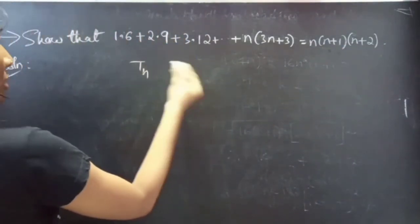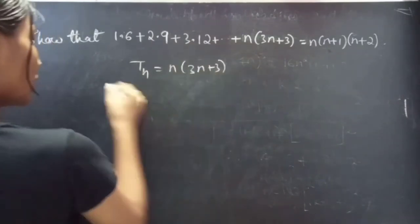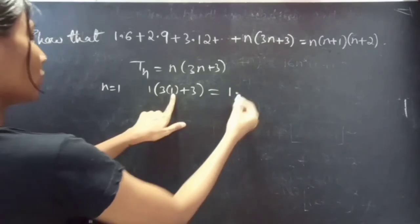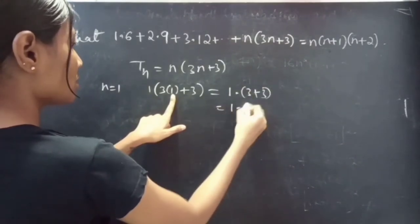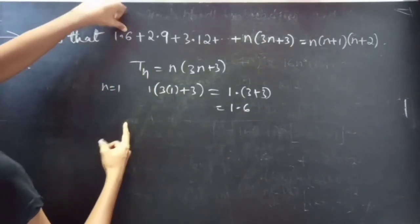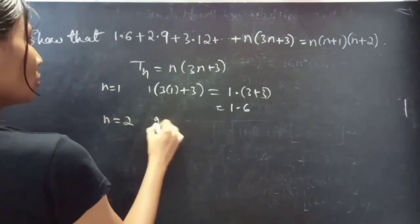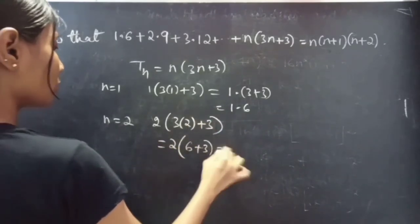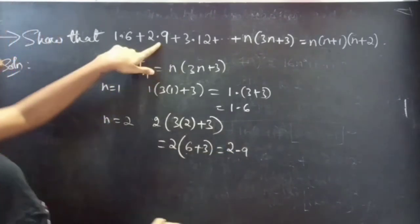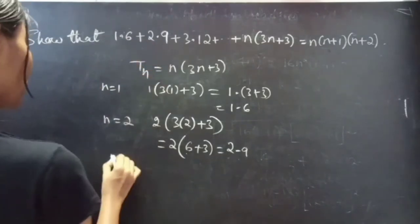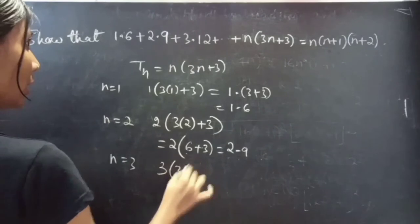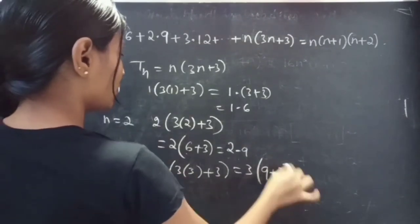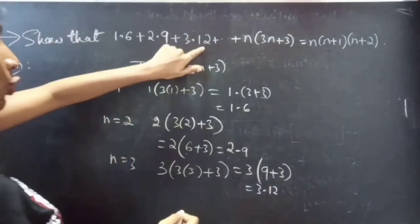Here we have the nth term: tn equals to n into 3n plus 3. If you put n equals to 1, you will get 1 into 3 times 1 plus 3, which equals 1 into 6. When n equals to 2, we get 2 into 3 times 2 plus 3 equals 2 into 9. When n equals to 3, we get 3 into 3 times 3 plus 3 equals 3 into 12, which is our third term.